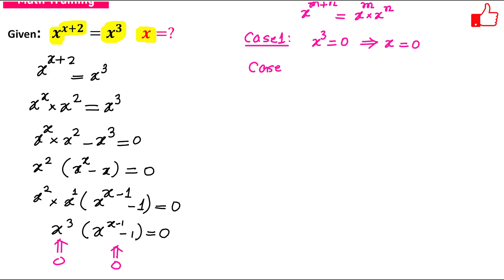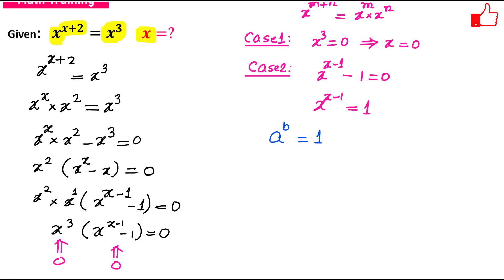Now Case 2: we have x raised to the power x minus 1 equals to 1. Now if you consider an expression like a raised to the power b equals to 1, how can this be achieved? There are 3 possibilities. The first possibility is b equals to 0 and a can be any number but not equal to 0. The second possibility is base equals to 1 and b can be any real number.